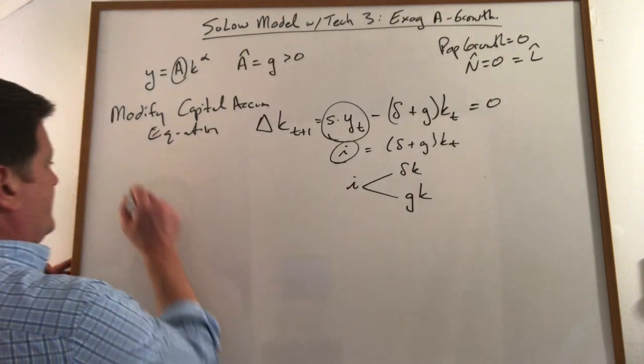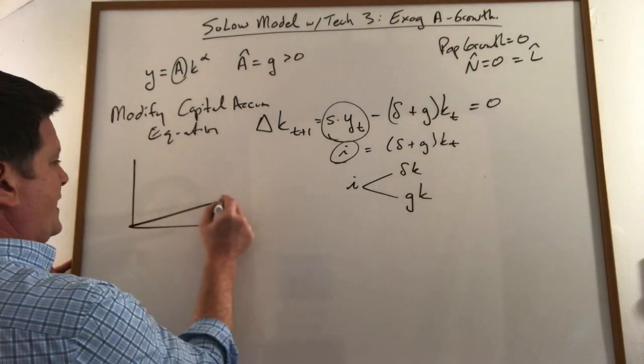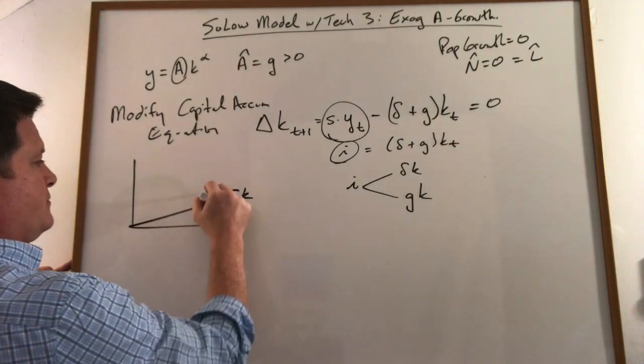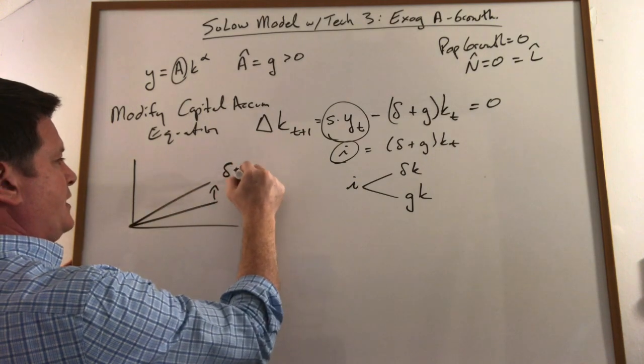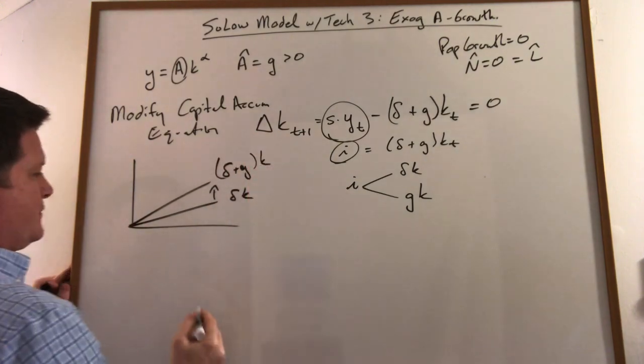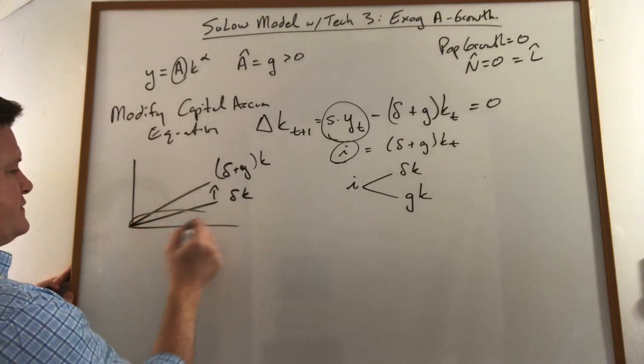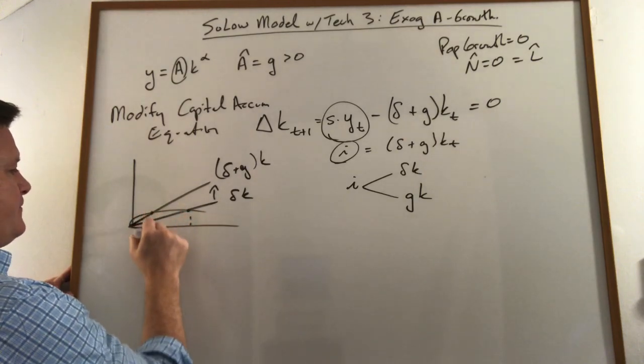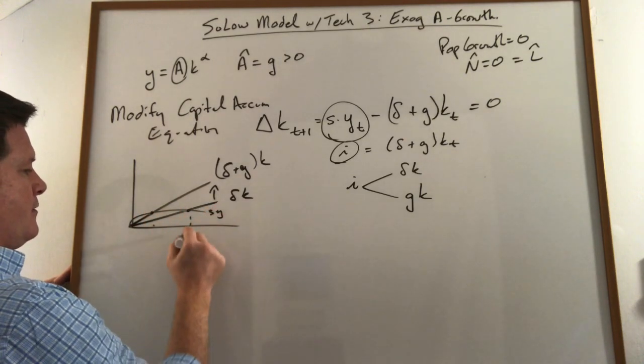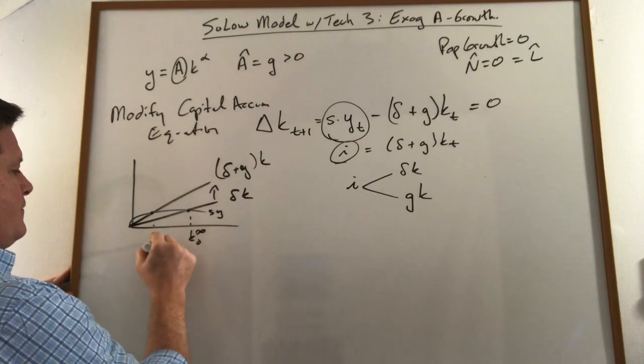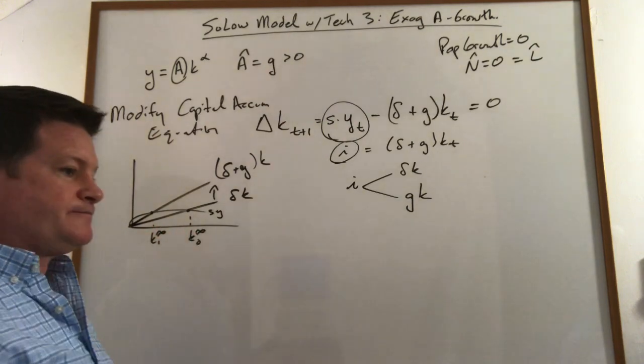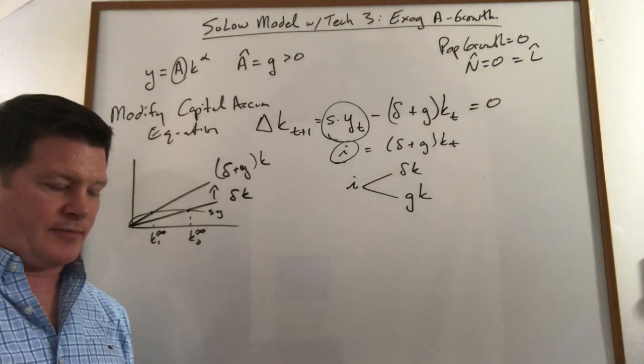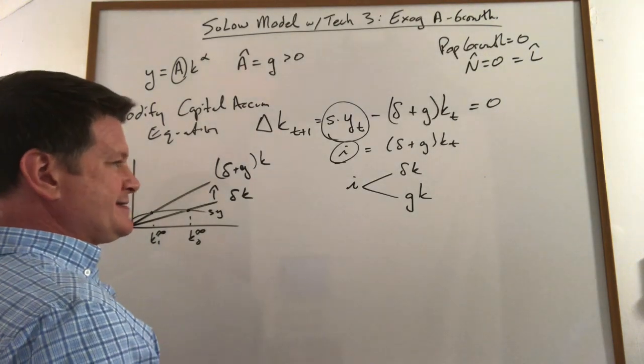What does it look like? Again, just like adding population, we're just going to add this over here. So I'm not going to put in all the curves, but we can see that we get a lower steady state level of capital stock.